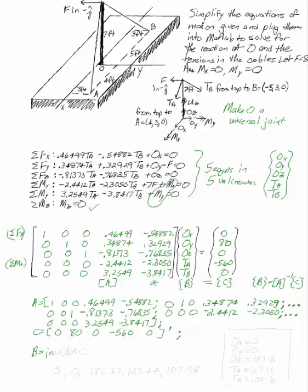And now all I have to say is B, which is my answer, is inv A times C. Now I do want to see the answer there, so I'm not going to put a semicolon. And it spits out 0, 0, 186.67, 127.44, and 107.98.